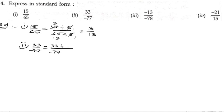So let us divide it with 11. 11 ones are 11, 3s are 33. 11 ones are 11, 7s are 77. So 3 by minus 7.